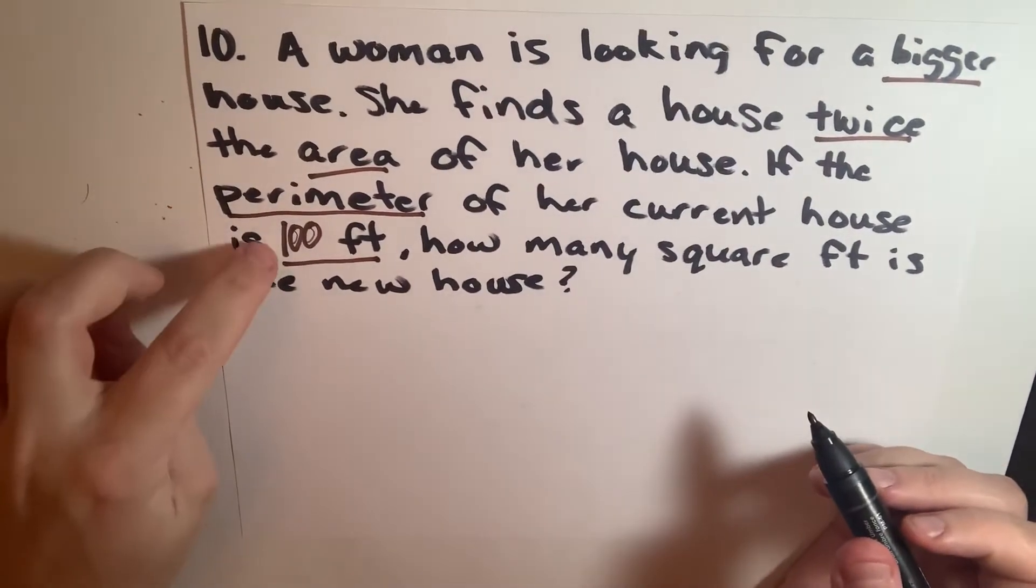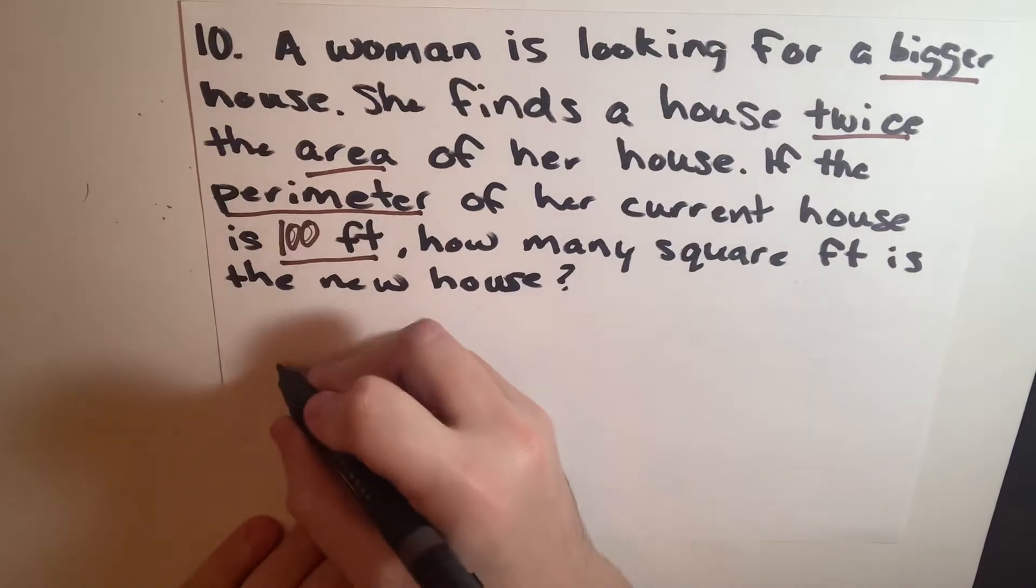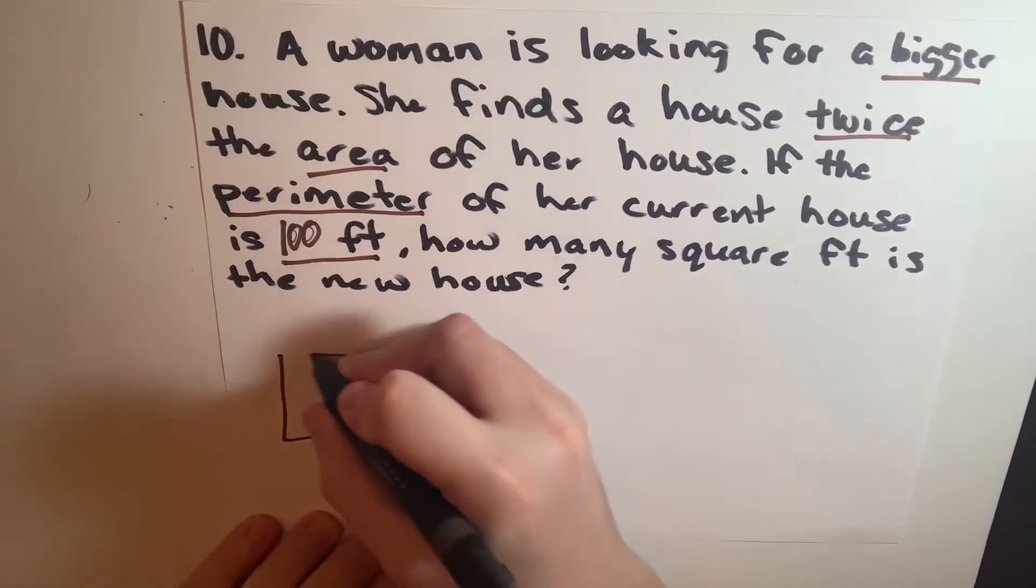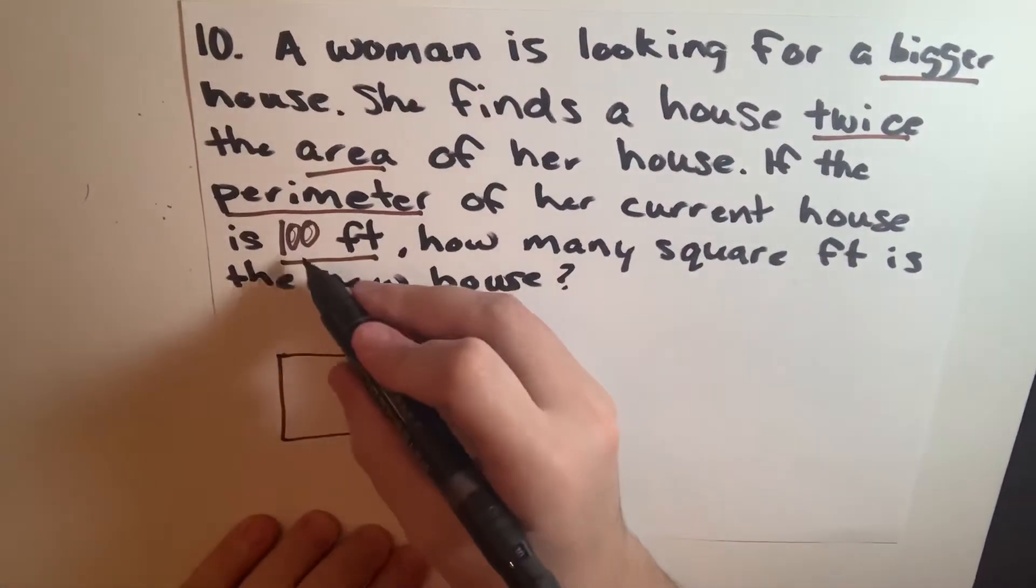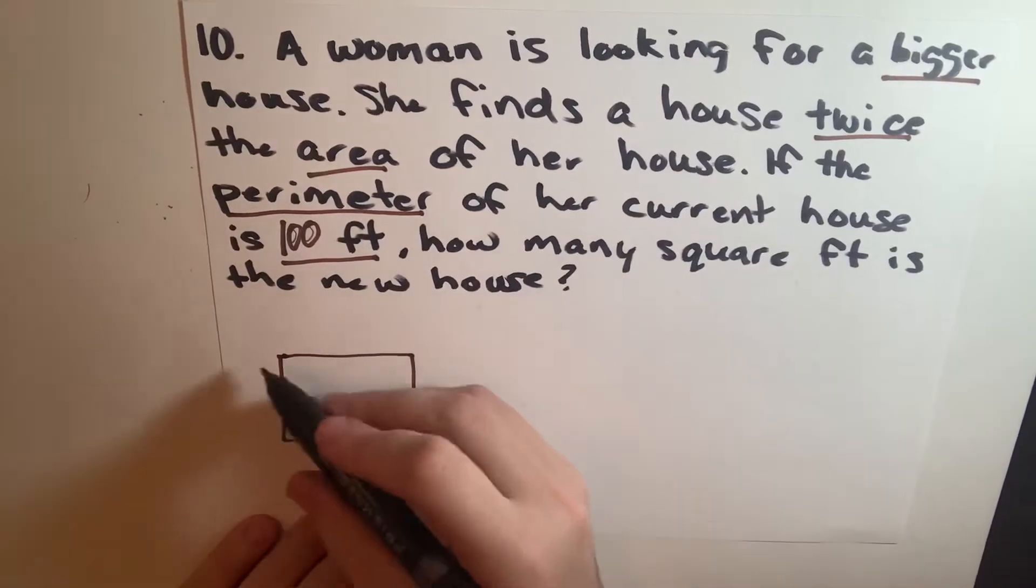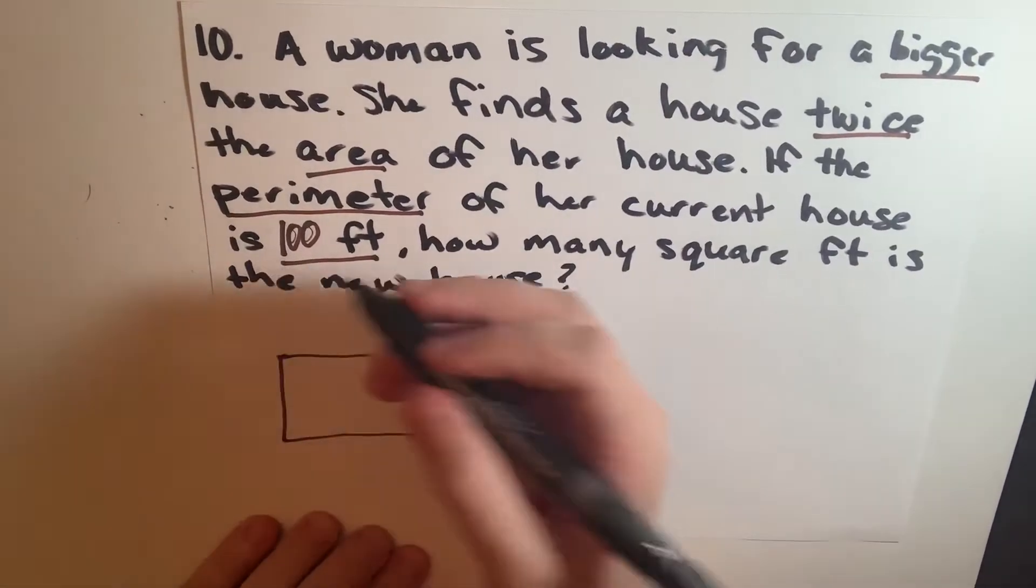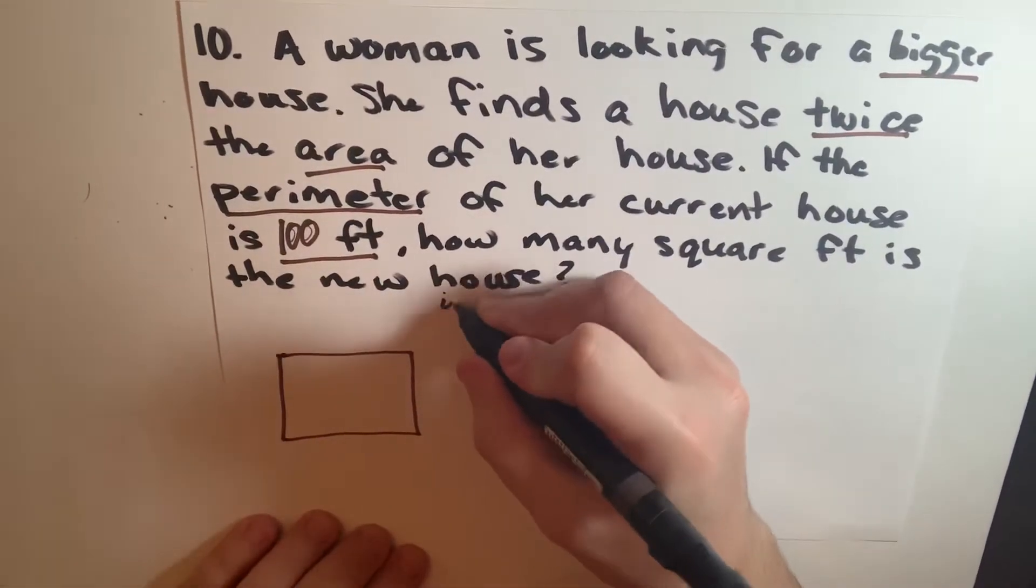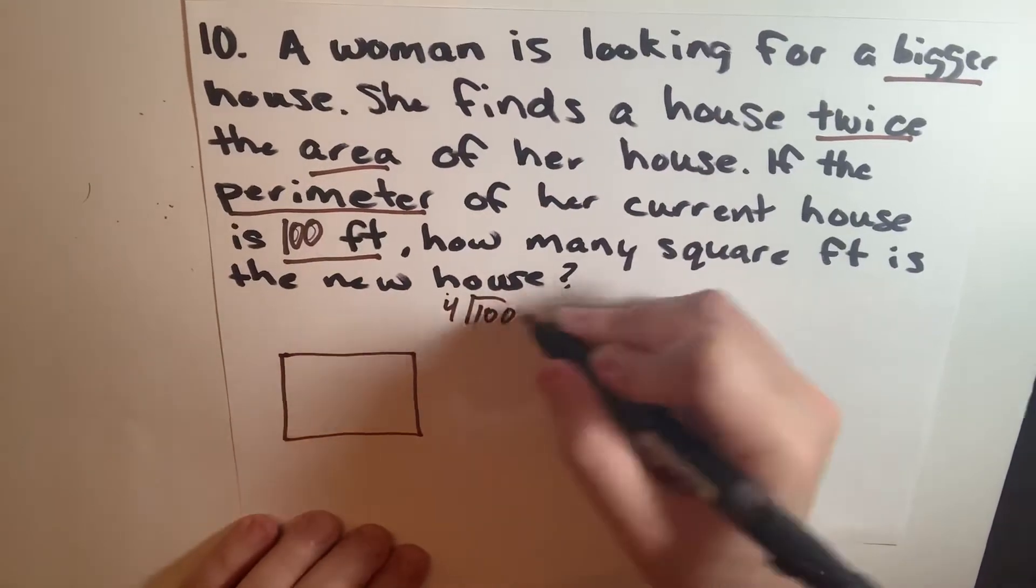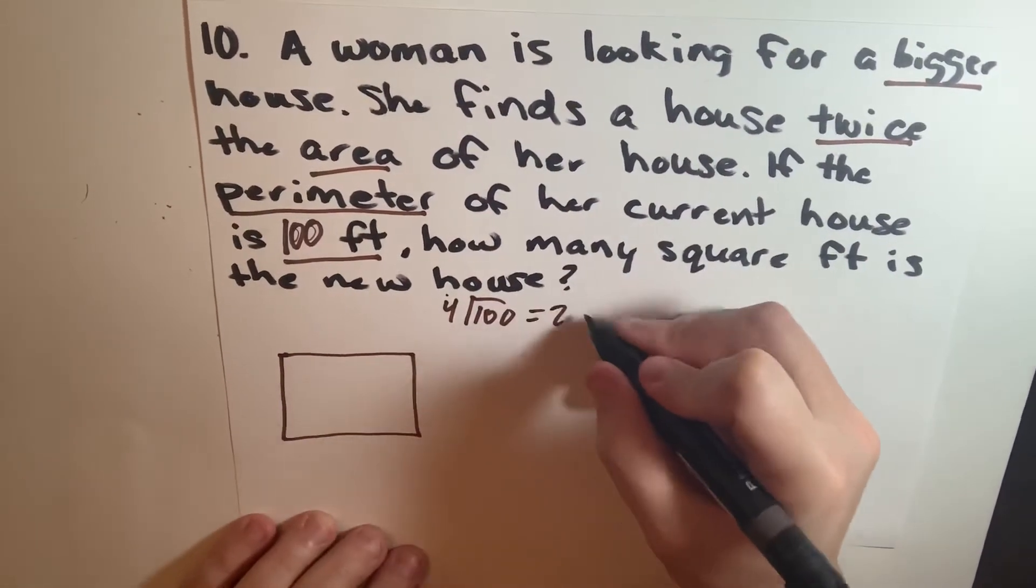So we know the perimeter is 100 feet and it's a house, so let's draw a square. For perimeter, that's the outside only, and there's four sides to a square, so we're going to divide 100 by 4, which equals 25.